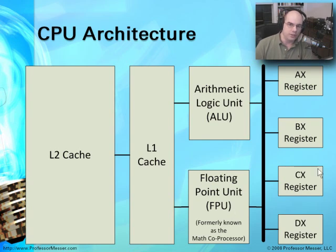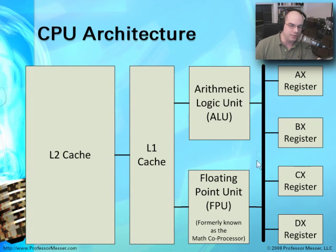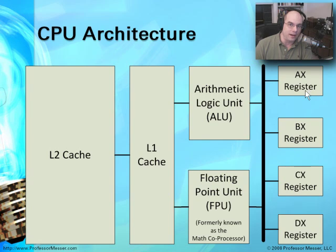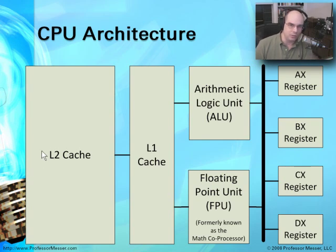On the far right part of the screen are registers. Registers are simply a place where we can temporarily store information so that the ALU and the FPU can perform calculations on it. It's a place to take information from memory, put it into a location, and perform calculations on those values. In reality, there are many more registers than the four listed here, but four very common ones are AX, BX, CX, and DX. This process of bringing memory in, putting it into a register, performing calculations on that register, and sending it out again takes place over and over inside a central processing unit.